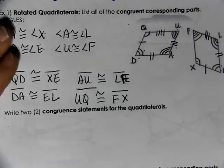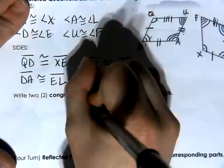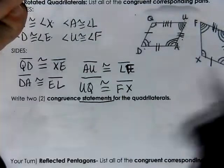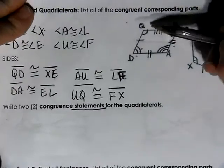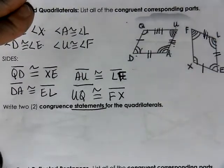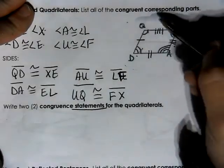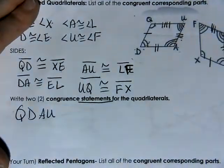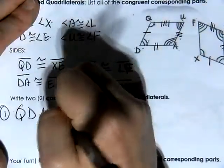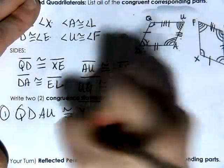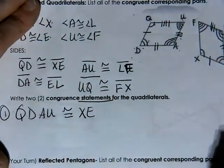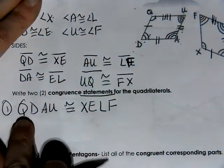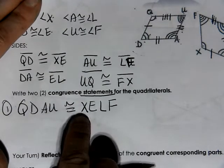Now we're going to write two congruent statements for our quadrilaterals. A congruent statement uses all of the letters — and when you list letters you have to go around the shape; no crisscrossing. So going Q, D, A, U — that's congruent to X, E, L, F. So quadrilateral QDAU is congruent to quadrilateral XELF. That is one statement.